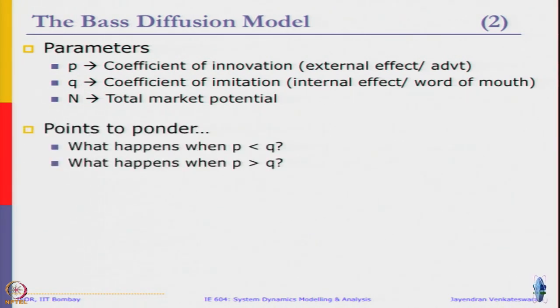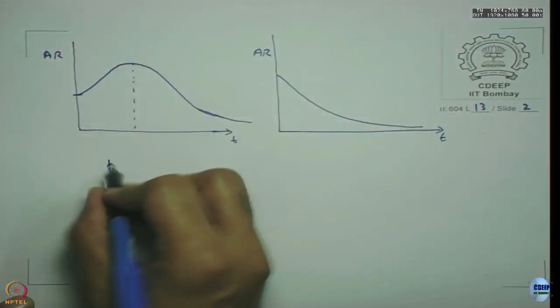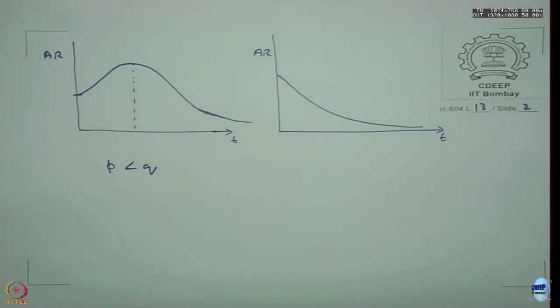The simple thing that we want to try out is what happens when p is less than q and what happens when p is greater than q to understand the dynamics that is going to come into play. When p is less than q, the effectiveness of advertising is lower than the effectiveness of word of mouth. P greater than q means effectiveness of advertising should be greater than the effectiveness of word of mouth.